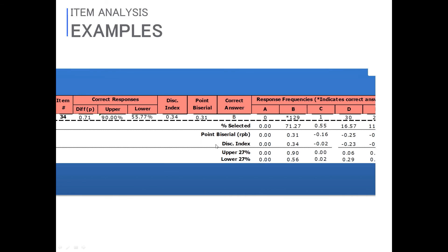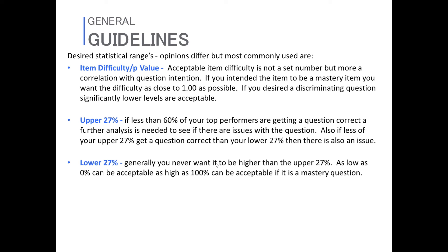Now, some general guidelines. As I hope you saw from the examples, there is not a specific number I'm particularly comfortable with for any of these specific stats. For item difficulty and p-value, acceptable item difficulty is not a set number — it's a correlation with your question intention. As a faculty member, you have to decide: is this a mastery level item, or is this supposed to be a discrimination question? You have to have at least a gut feel for your intention, because that'll help you interpret the results.